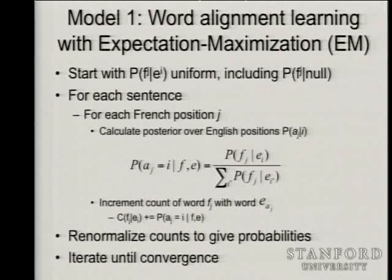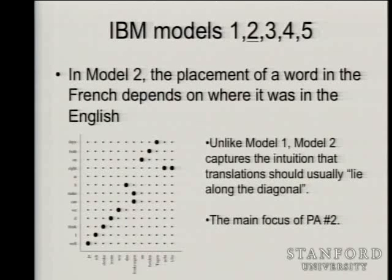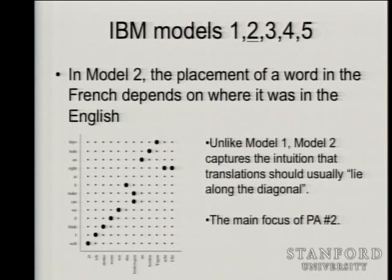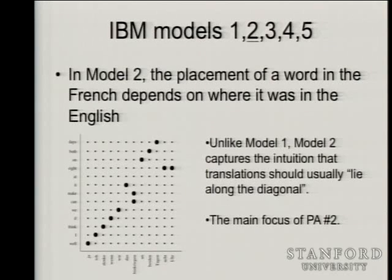For just the last couple of minutes, let me say a moment about what comes after model one and is the heart of the rest of what you have to do for the assignment. The first part of the assignment is to implement model one and get it to work. The second part of the assignment is IBM model two. There's this sequence of IBM models, the rest of which I will talk about next time.